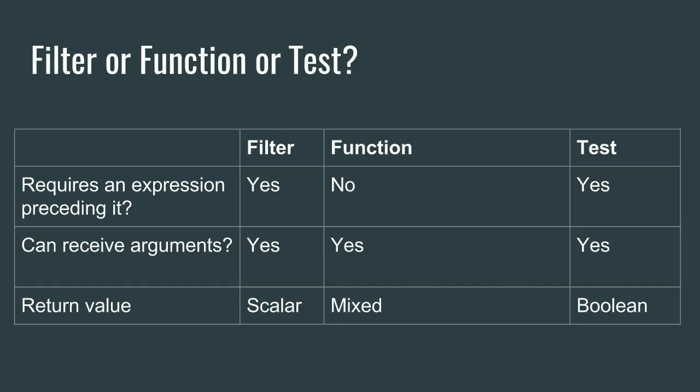Let's summarize filters, functions, and tests. For filters: they require something preceding them, can receive arguments, and the return value is always a scalar — something to print right away. For functions: they don't need anything preceding them, can receive arguments, and the result can be many things — something to print, an array, or a modification of the entire page. For tests: they require something before them, can receive arguments, and always return a Boolean yes or no value.